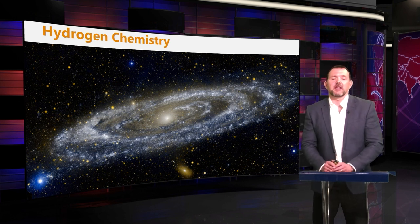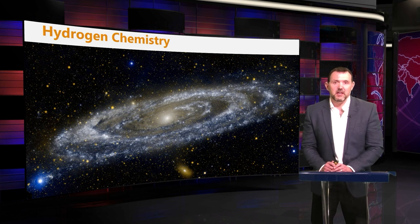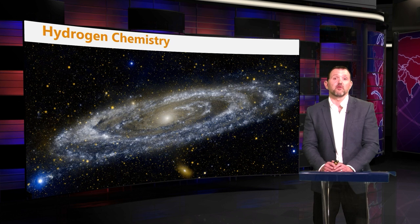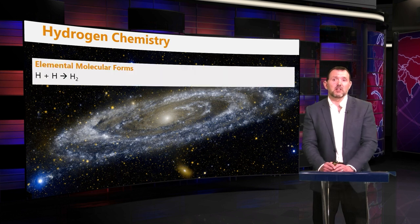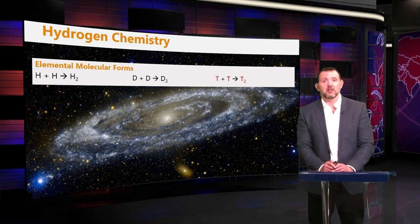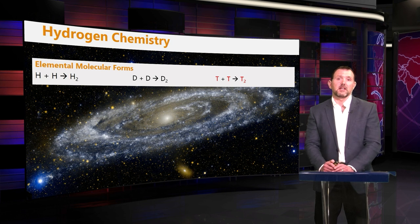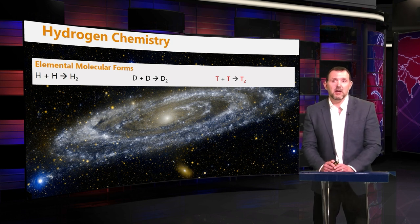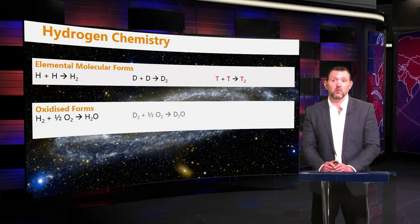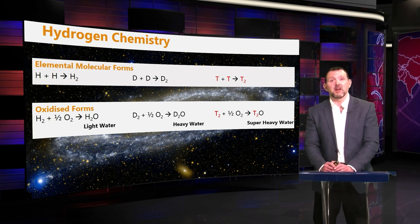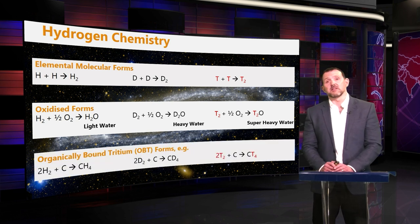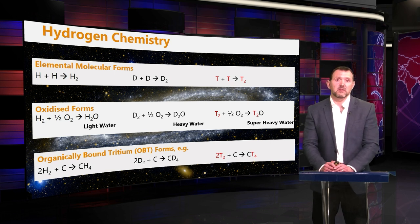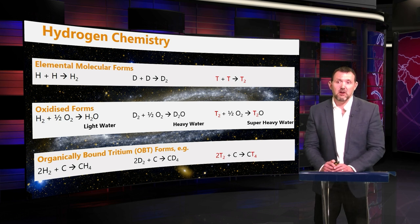Hydrogen is ubiquitous — the most common element in our universe — and has the most compounds or reactions with any other element. We have similar chemistry for all the isotopes: hydrogen likes to go around in pairs, and the same is true for deuterium and tritium, giving the elemental molecular forms H2, D2, and T2. Hydrogen also reacts with oxygen to form water, and so do deuterium and tritium — hence heavy water (deuterium oxide) and super-heavy water (tritium oxide). Hydrogen will also react with organic compounds to form methane, and so do deuterium and tritium to form deuterated and tritiated methane.